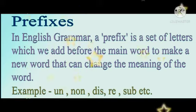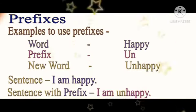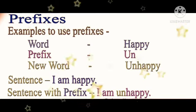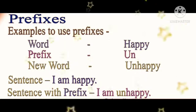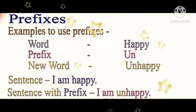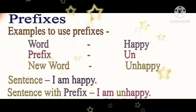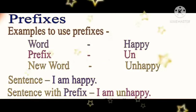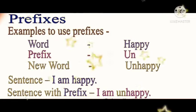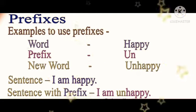Now we are going to use examples of these prefixes. Our first word is happy. To use a prefix for this word, we are going to use 'un'. So the new word will become unhappy. It is changing the meaning of happy — it becomes unhappy. For example, the sentence 'I am happy' with the prefix will become 'I am unhappy'.